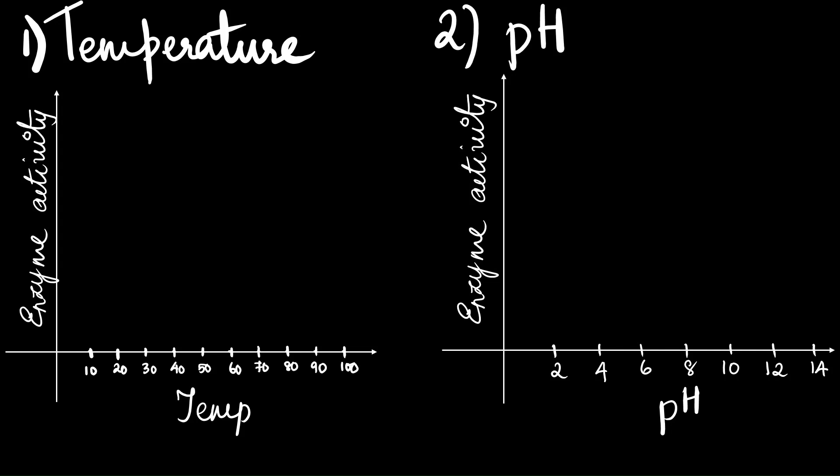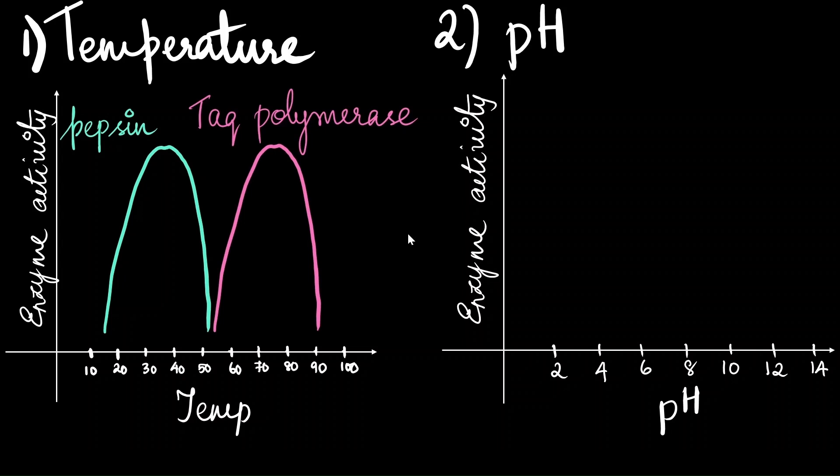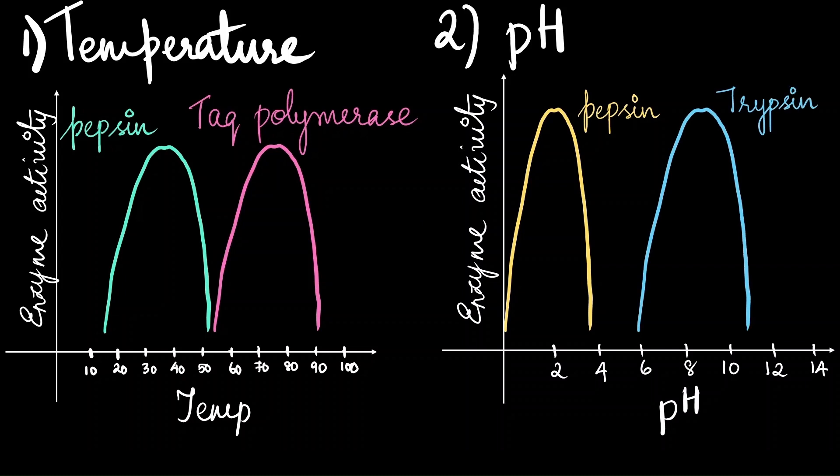Let's look at the enzyme activity of two different enzymes. The first one is pepsin and the second is tag polymerase. Similarly, to study the pH, we would use pepsin and trypsin. What you are noticing here is that all the four graphs look the same. That is because enzymes work in a narrow range of temperature and pH. But there is one singular temperature or pH where enzyme shows its maximum activity that we call as optimum temperature or optimum pH.